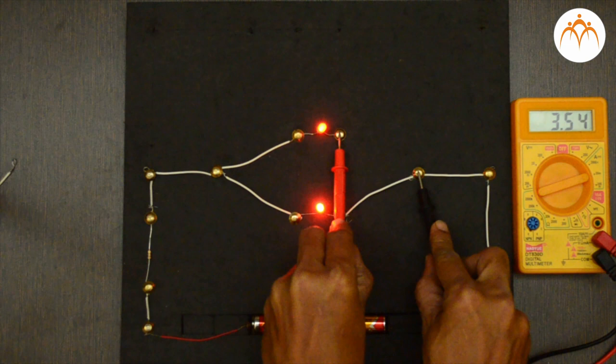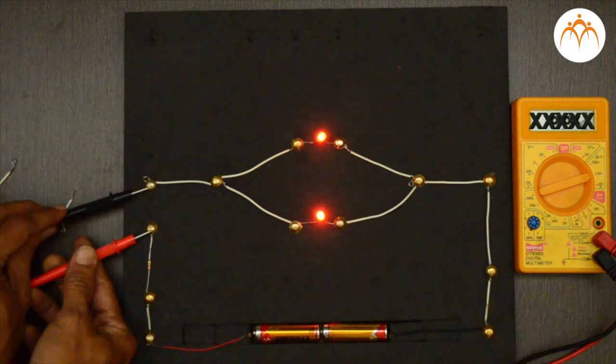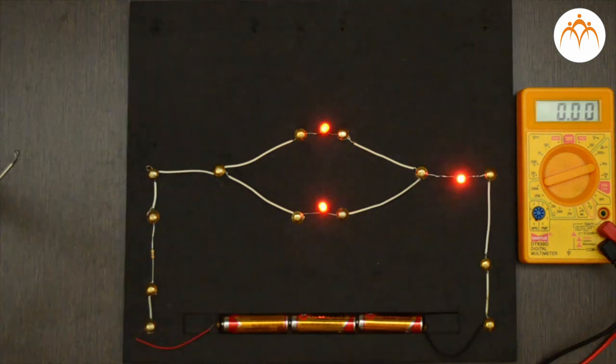Current flow through each branch is measured, and current flow in the external circuit is also measured. Can you guess what will be the current reading at this location? Repeat this exercise for different scenarios, like two LEDs in parallel while one LED in series as shown.